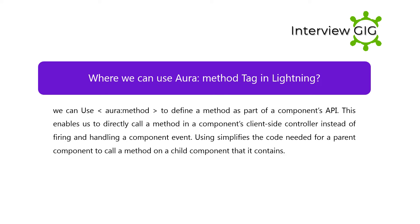Where can we use the Aura method tag in Lightning? We can use aura:method to define a method as part of a component's API. This enables us to directly call a method in a component's client-side controller instead of firing and handling a component event. Using aura:method simplifies the code needed for a parent component to call a method on a child component that it contains.